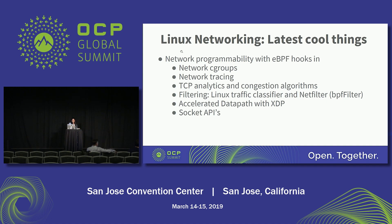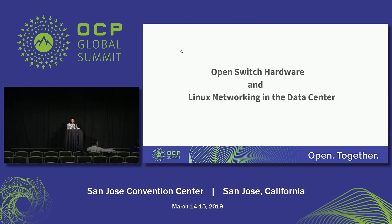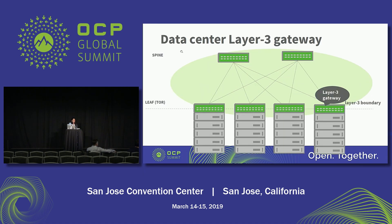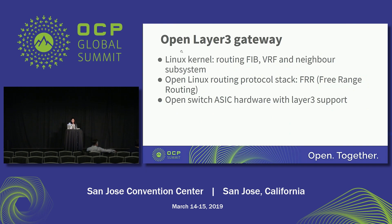Now let's come to switch hardware and Linux networking in the data center. Everyone knows the modern data center spine-leaf topology. How do you build a layer three gateway using Linux and a switch ASIC? Linux has everything today — the routing FIB, FRR as the best routing suite available, an open routing protocol stack. You can use it with the Linux kernel FIB, VRF, and neighbor subsystem, and a switch with layer three support. There you go — you have a pure layer three data center fabric.